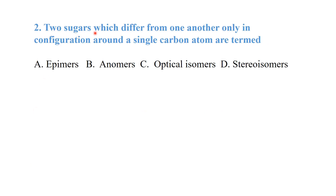Two sugars which differ from one another only in configuration around a single carbon atom are termed as? This question is from autoisomerism. The answer is epimers.